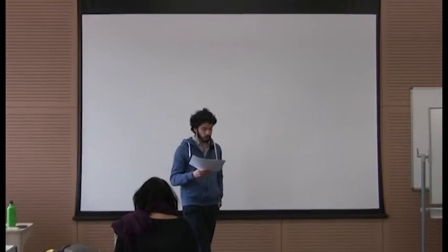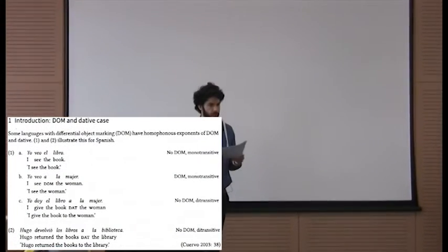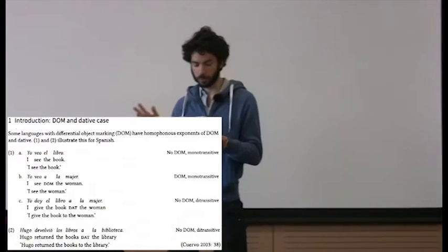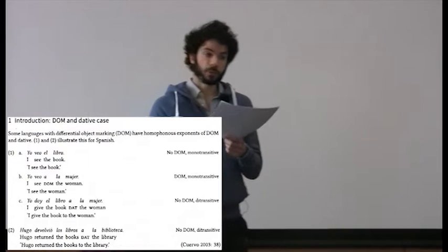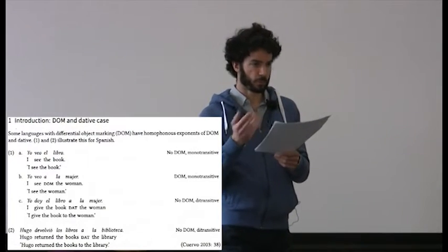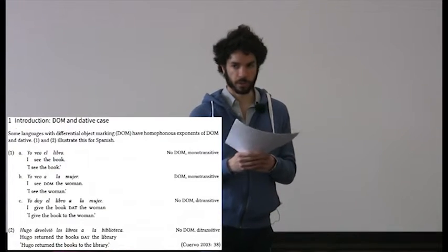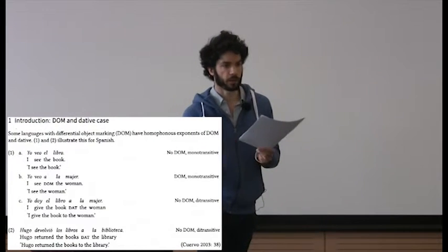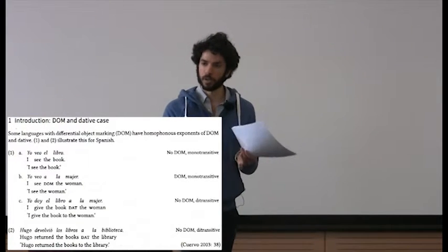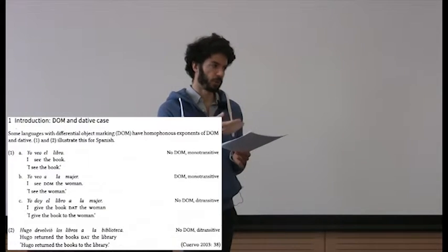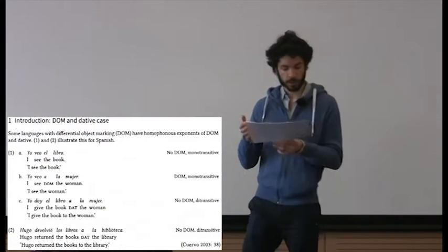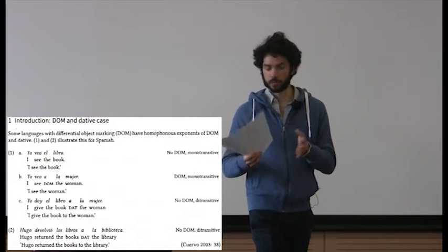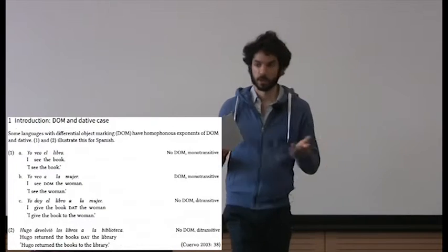On the first page of the handout, examples one and two show this. In 1a we have a transitive clause with a definite direct object: 'yo veo el libro' — I see the book — just subject-verb-object, nothing special. But in 1b, when the direct object is animate, we get this differential object marking element: 'yo veo a la mujer' — I see the woman — with this 'a' appearing. In 1c, a ditransitive construction where the direct object does not get differential marking, but the recipient argument 'yo doy el libro a la mujer' — I give the book to the woman — is introduced by an element homophonous with the differential object marking in 1b.